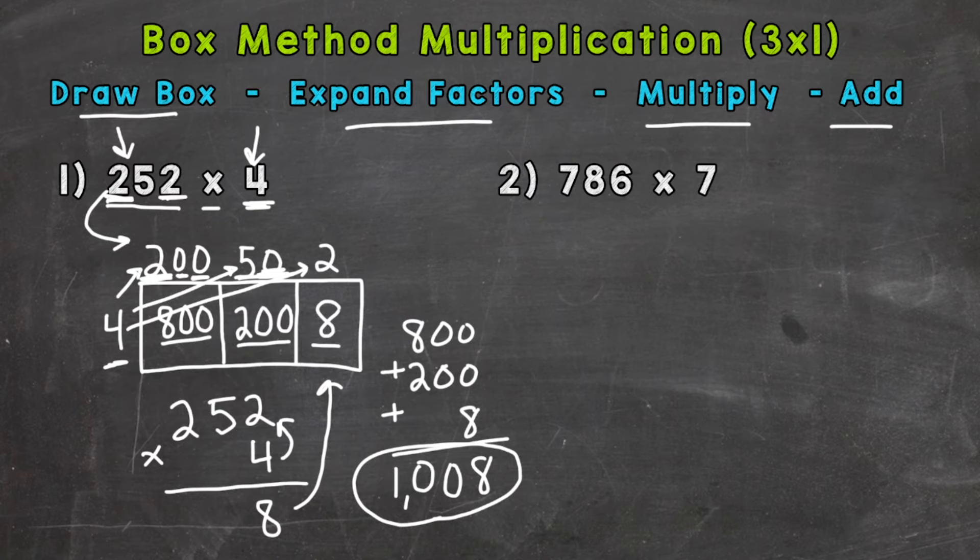Then we do 4 times 5, but really this 5 has a value of 50, just like in our box method where we did 4 times 50. So 4 times 5 gives us 20, but really that's a 200 there, because we did 4 times 50, which is 200, and we carry that 2 over to the hundreds place.